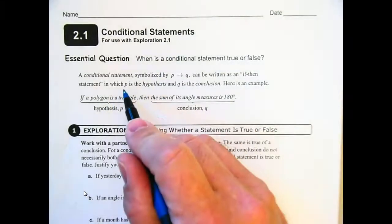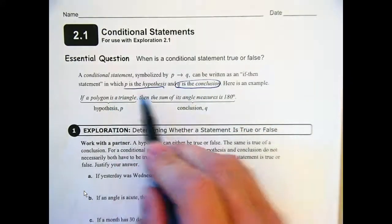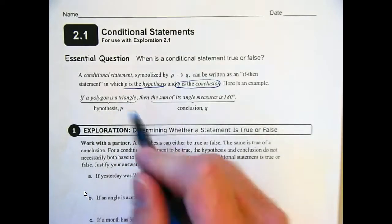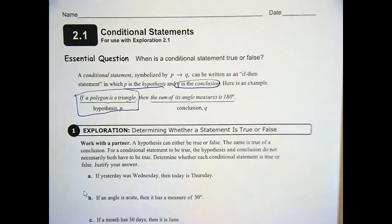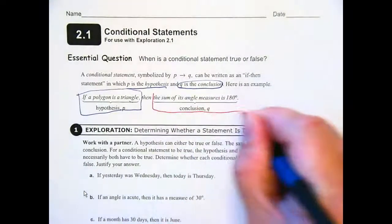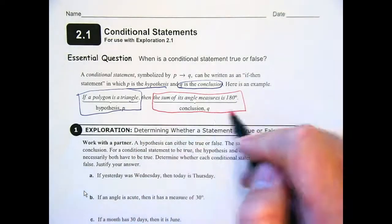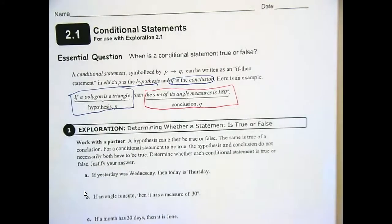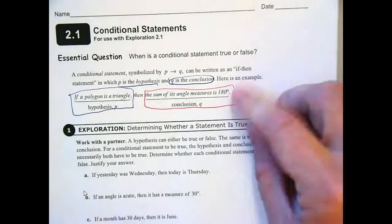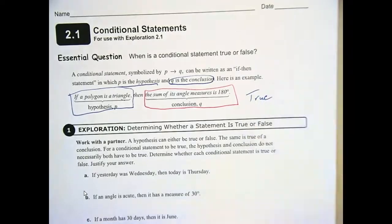P is our hypothesis, q is our conclusion. So: if p then q. If a polygon is a triangle — that's our hypothesis — then the sum of its angle measures is 180 — that's our conclusion. Is that a true statement? Does a triangle have all its angles add up to 180? Yes. So that's a true statement — its truth value is true.